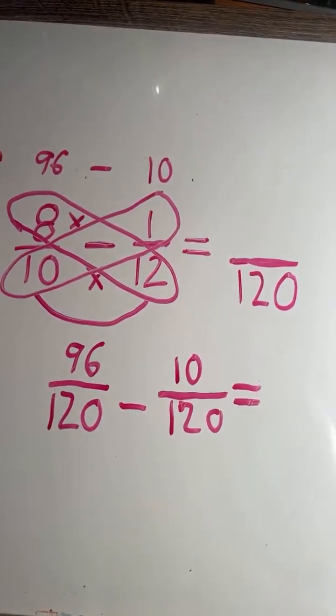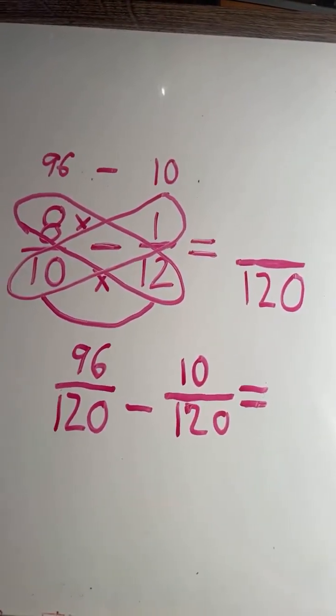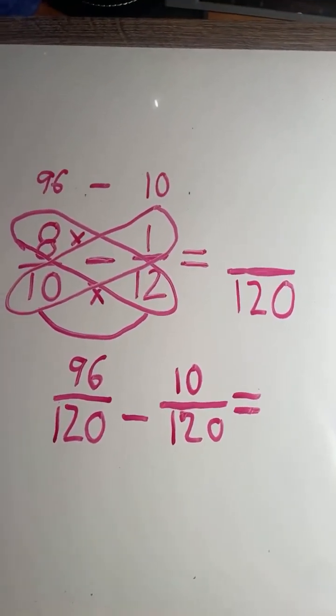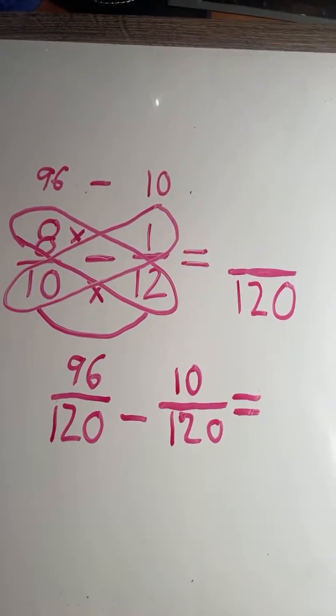1 twelfth is equivalent to 10 120ths. Now we can subtract our numerators. 96 minus 10 equals 86.